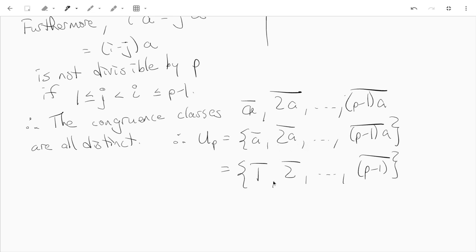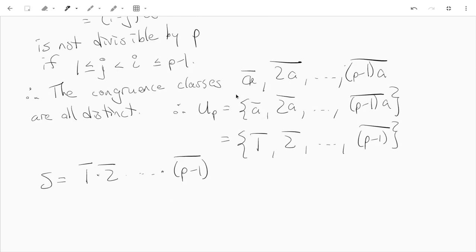So that gives me a way to describe a number in two different ways. And I'm going to multiply all the elements of Uₚ together. So let's call that S. That's the product 1 times 2 times... (p-1). But this is also a way to describe Uₚ. So if I multiply all the elements of Uₚ I get the product of all these. So this is S as well. So these are the same congruence class in Uₚ.